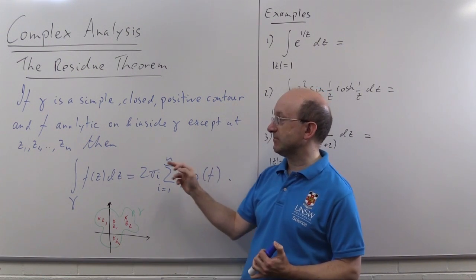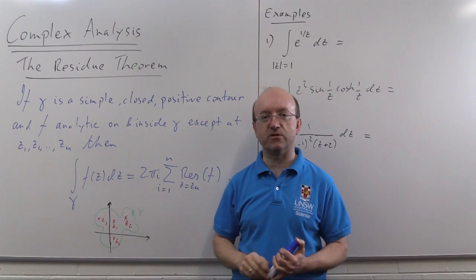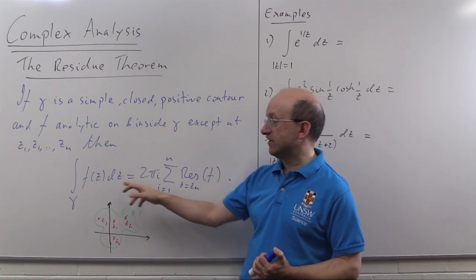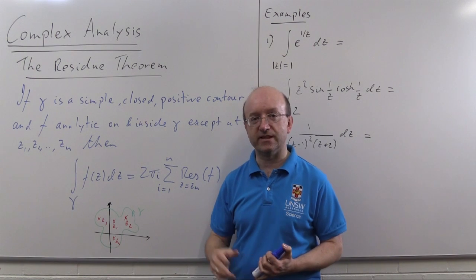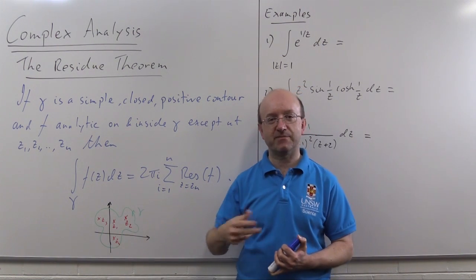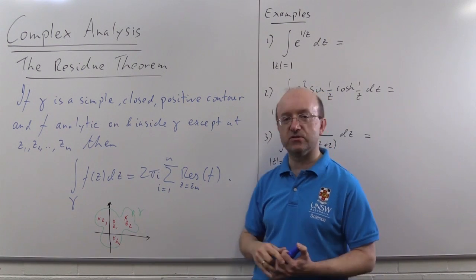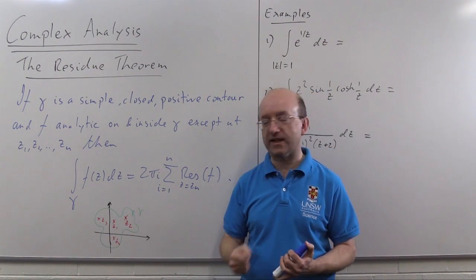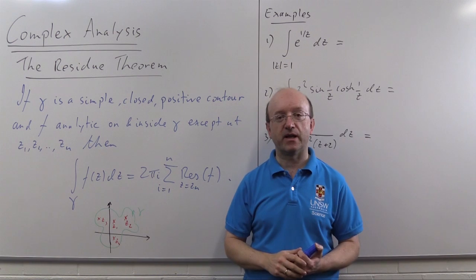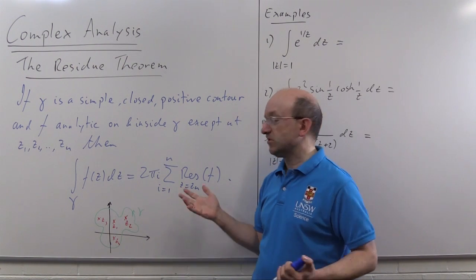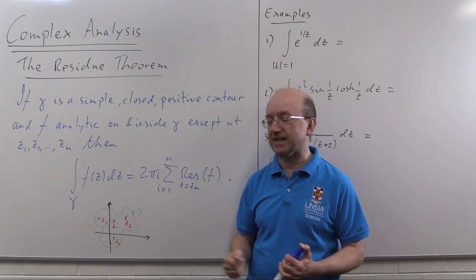and analytic inside except at a finite number of points z1 to zn that must be inside gamma, then the integral of f along dz is essentially given just by summing up these numbers you've attached to the singularities. You sum the residues at each of those singularities multiplied by 2πi and that's the integral. As long as you have the residues you don't need to do any integration you just need to add up the numbers.